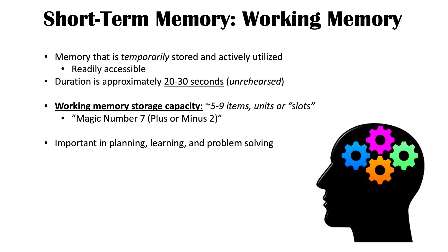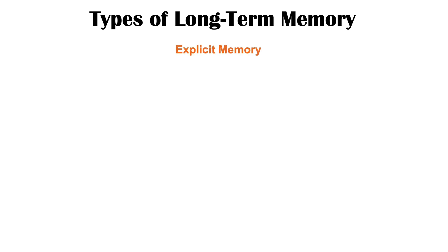If certain information in short-term memory is put into long-term storage — which is oftentimes performed by the hippocampus, which consolidates this information into long-term storage — we then have long-term memory. There are different types of long-term memory. We're first going to talk about explicit memory. Explicit memory is a type of long-term memory also known as declarative memory, and it is memory that is consciously recalled — you can actually bring it to conscious awareness and declare it.